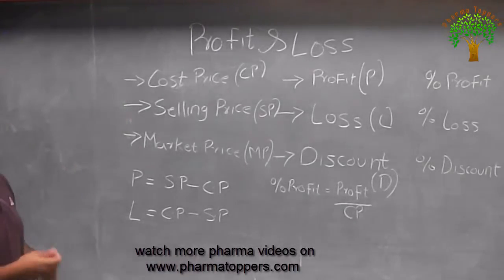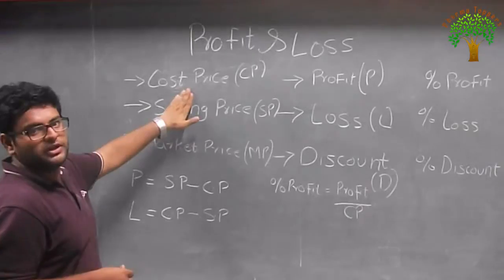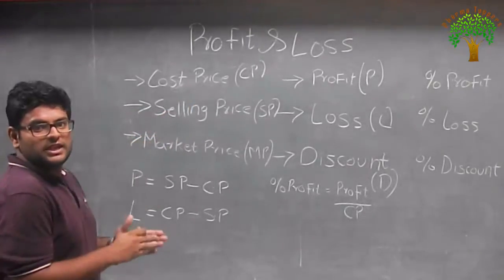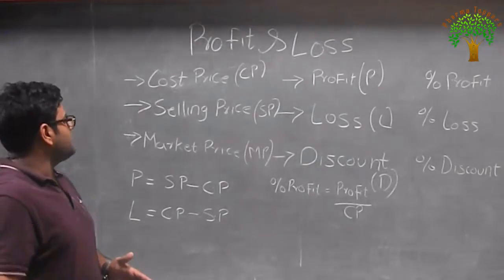First is the cost price. The cost price is the basic cost of the manufacturer or the manufacturer of a commodity. Now what is the selling price? The selling price would be the price at which the manufacturer would be selling.